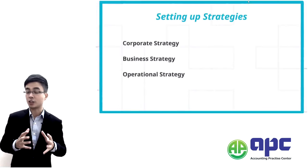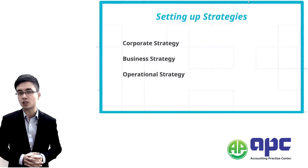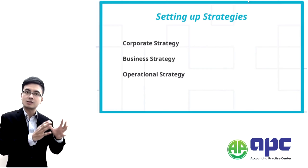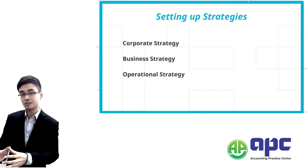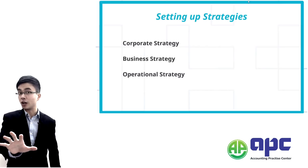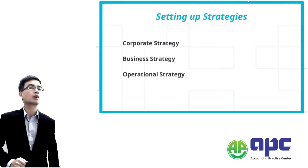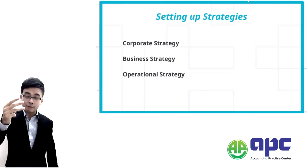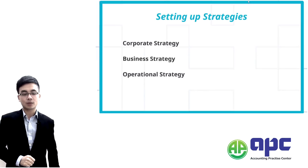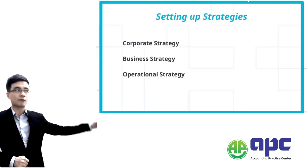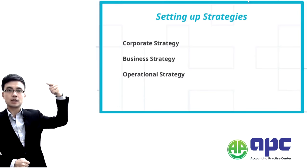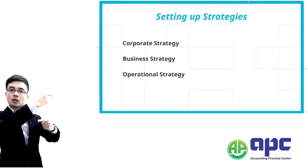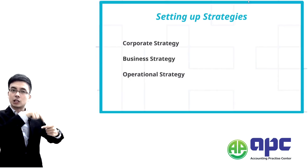Now let's come to chapter two — where we set up the strategies. According to Johnson, Scholes and Whittington, we divide strategy into three levels. The first level — the top level — is called corporate strategy. The middle level is business strategy, and the lower level is operational strategy.